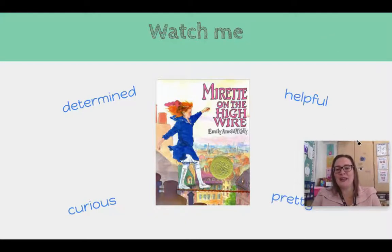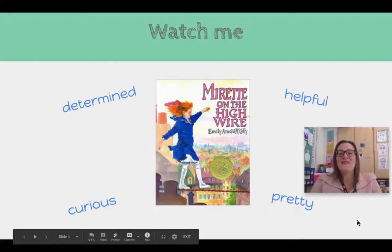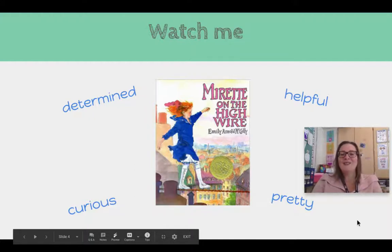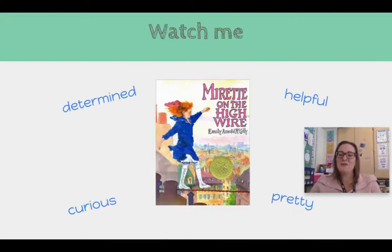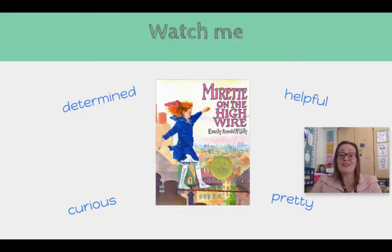And I'd also say that she was pretty. When I looked at Marrette, I loved that she had beautiful red hair and she often had a bow in her hair and some nice clothes. So I would say that she's pretty. When I look at these character traits, some of them are inner traits — things that you would find on the inside of a person, in their heart, in their head. And some of these are outer characteristics, like pretty, because that's how I felt she looked. So my character traits that I chose for Marrette are determined, helpful, curious, and pretty.